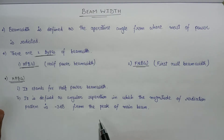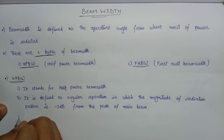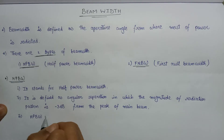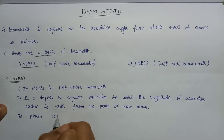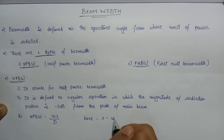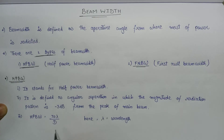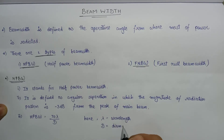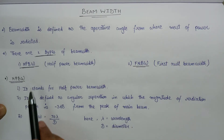If we talk about the representation for the half power beam width, then HPBW is equal to 70 lambda over D, where lambda represents the wavelength and D represents the diameter. This is all about the first type of beam width, that is half power beam width.